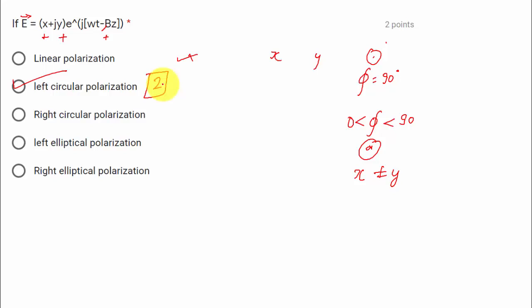So option two is correct — it is left circular polarization. The details of how to distinguish linear, left circular, right circular polarization from an expression will be discussed in a separate lecture.